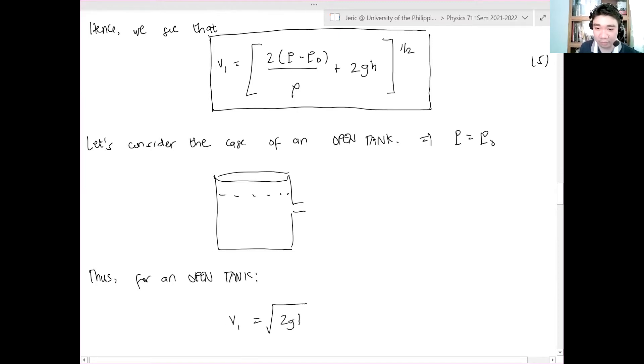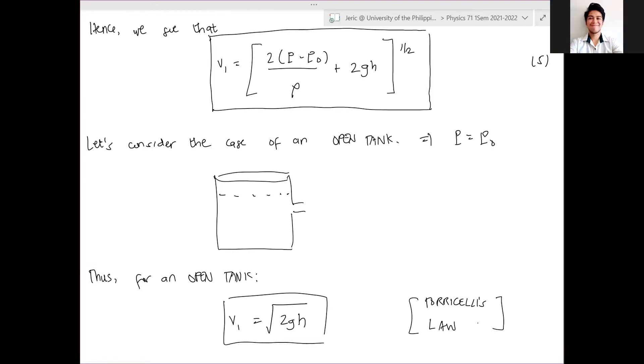Hence, from equation 5, you get the same derivation because it doesn't matter if it's open or closed since the pressure is fixed. Thus, for an open tank, V1 is simply square root of 2 G H. This is known as Torricelli's law. It's only dependent on the height difference between the surface and the hole. That's Torricelli's law of the final velocity of a fluid coming out of a hole of a container that's open, or the pressure at the surface is atmospheric pressure, or the same pressure at the top and at the hole. Questions? That's basically, we have derived an expression for Torricelli's law.